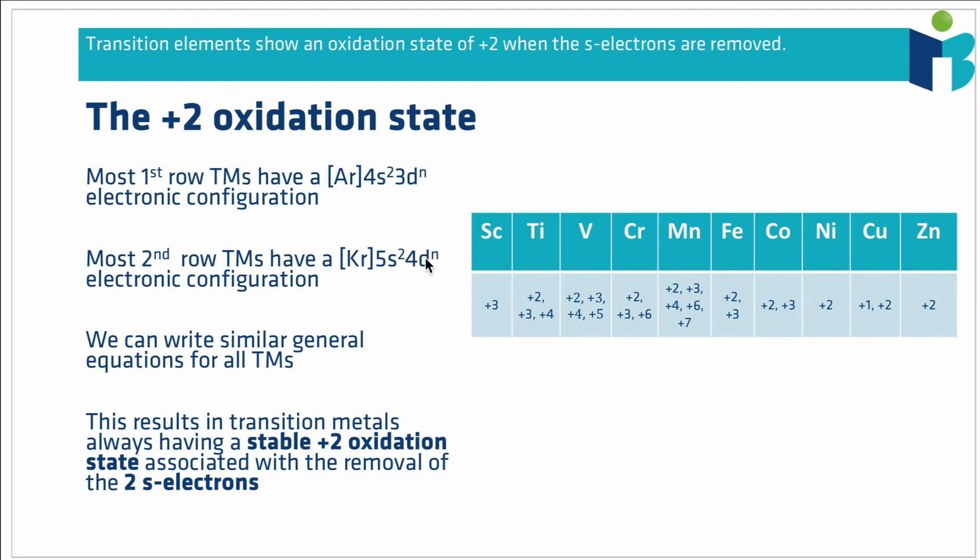And if you remember, when we ionise from transition metals, we actually remove electrons first from the s orbitals and then from the d orbitals. So the 4s electrons are removed before the 3d, the 5s are removed before the 4d. And what that means is that often it's relatively low energy and quite an accessible process to remove the 2s electrons. This gives rise to a stable plus 2 oxidation state because you can always just remove those 2 electrons that are in the s sub-level.